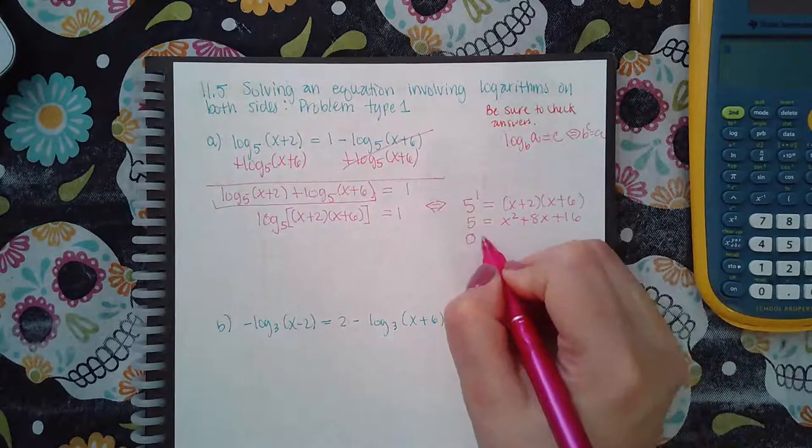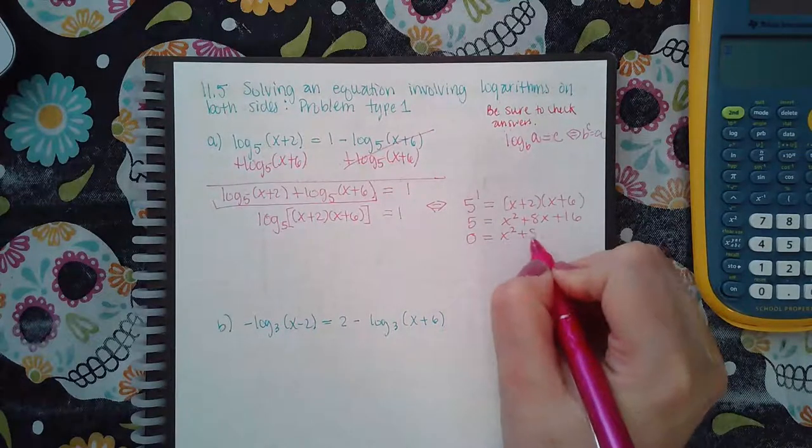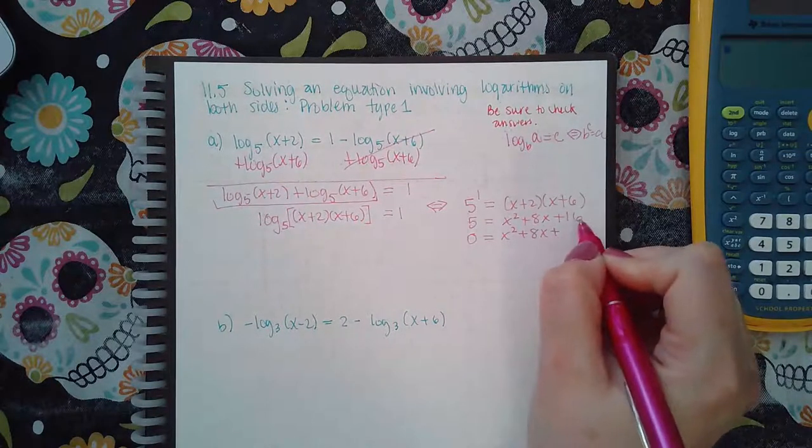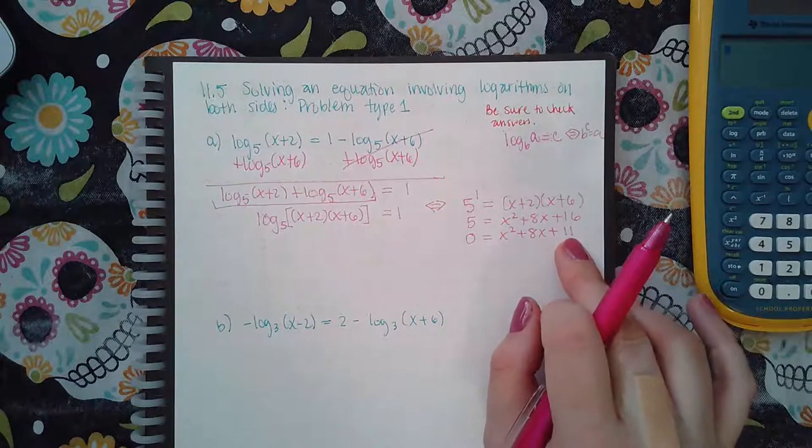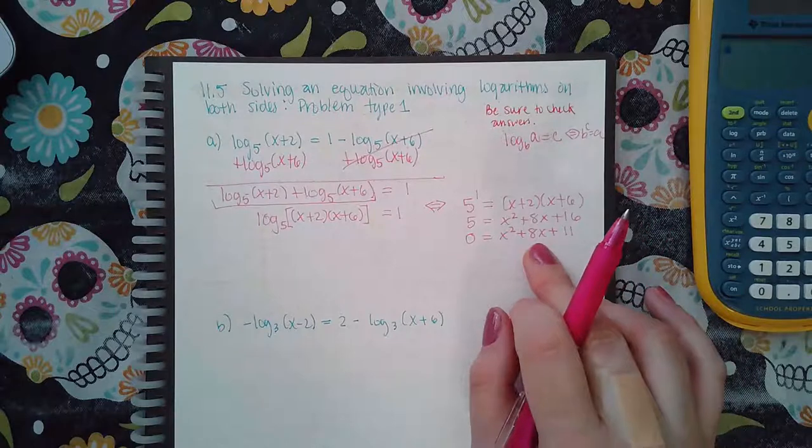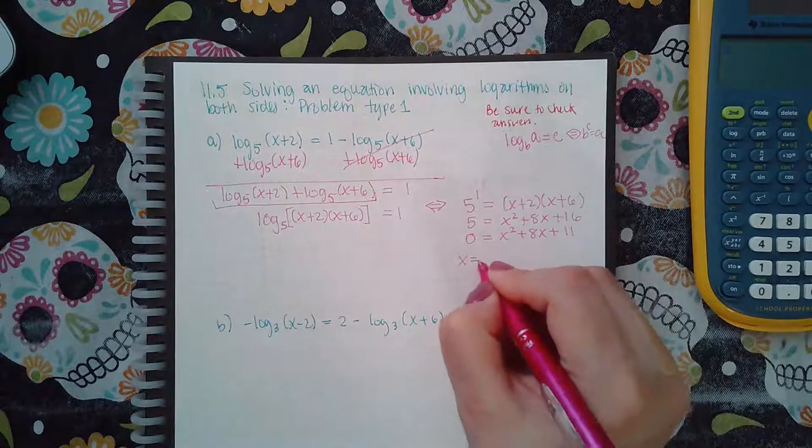And then I'm gonna minus five on both sides. So sixteen minus five will give me eleven. I would try to factor this, but there's no factors of eleven that will add to give me eight. So I'm gonna go ahead and use the quadratic formula.